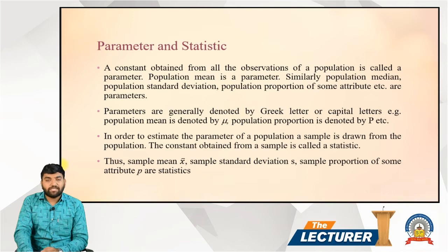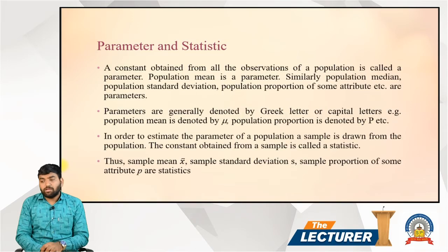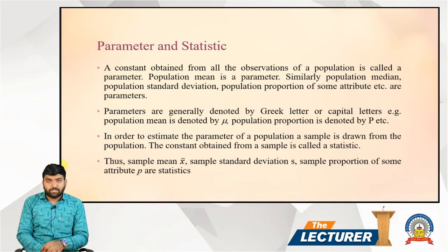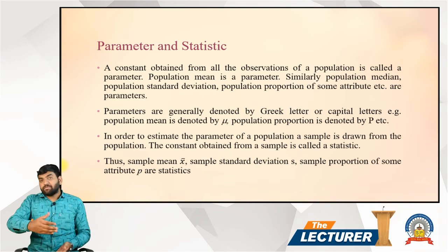Now let's look at parameters and statistics. A constant obtained from all the observations of a population is called a parameter. Examples of parameters include: population mean (μ), population standard deviation, population proportion, and other population attributes.